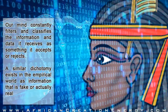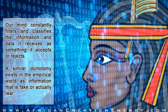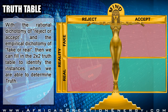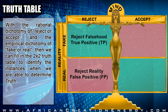Just as a dichotomy exists in the rational world of the mind — information that is either rejected or accepted — a similar dichotomy exists in the empirical world: information that is fake and information that is actually real. With the rational dichotomy of reject or accept and the empirical dichotomy of fake or real, we can fill the two-by-two truth table. If we encounter information that is actually fake and our mind rejects it, that is an example of a true positive — an instance where our mind has made a correct determination. However, if we encounter information that is actually real and our mind rejects it, that is an example of a false positive, because our mind has made an incorrect determination and has rejected reality.